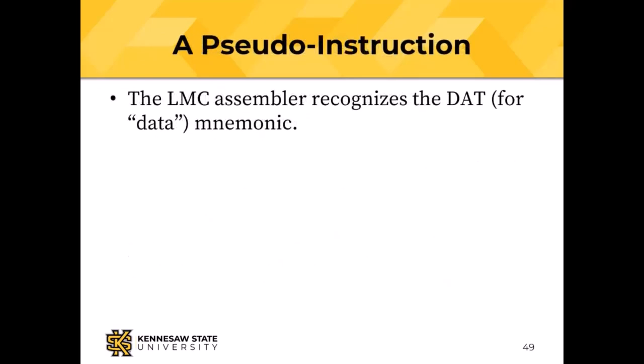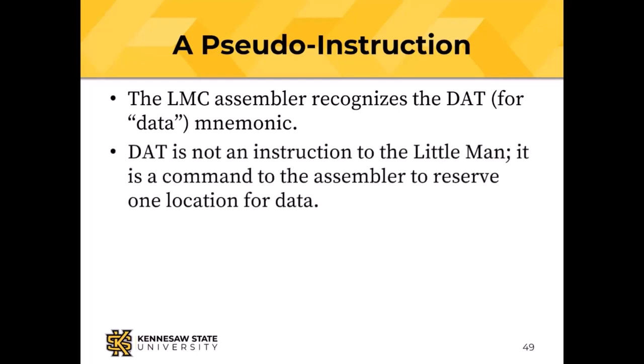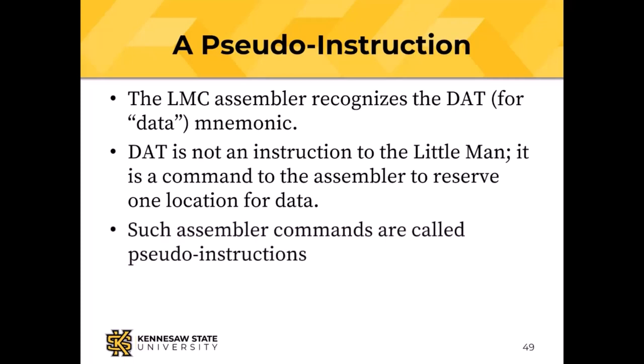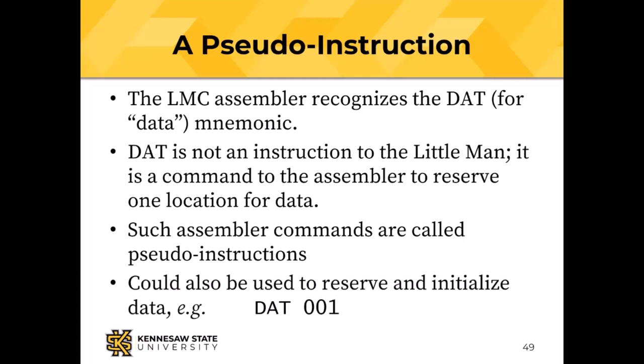The LMC assembler recognizes the DAT mnemonic for data and uses it to reserve one empty instruction word, so we can reserve a location for data and give it a name. These are called pseudo-instructions — you write them like an instruction but they're never executed by the CPU. We can also initialize data: writing DAT 001 in the assembler would find a memory location and load a 001 into it.